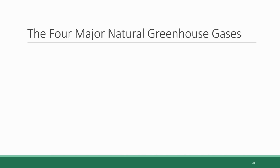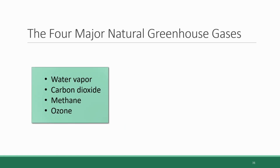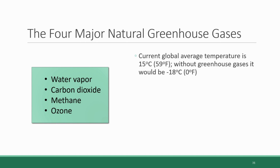Not all atmospheric gases have this heat-absorbing capacity. The four major naturally occurring greenhouse gases in the Earth's atmosphere are water vapor, carbon dioxide, methane, and ozone. These gases are important to the functioning of the Earth's systems — greenhouse gases are not bad, and having some amount of them is good and important. Our current global average temperature is 15 degrees Celsius, but without greenhouse gases and their heat-trapping capacity, it would be much colder: negative 18 degrees Celsius, or zero degrees Fahrenheit, on average across the Earth.